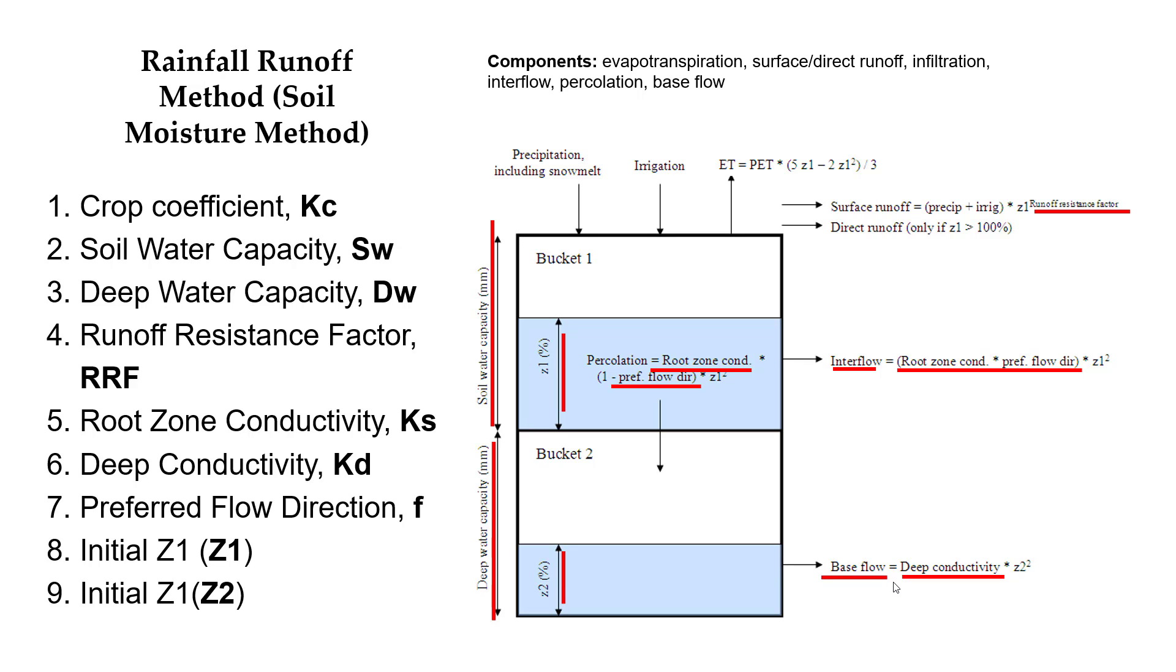On the other hand, like any model, it is necessary to set the initial conditions of some parameters. Initial C1 and C2 are the relative storage, expressed as the percentage of the total water capacity of the root zone and the deep zone, respectively.